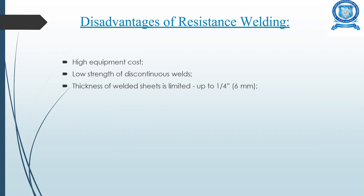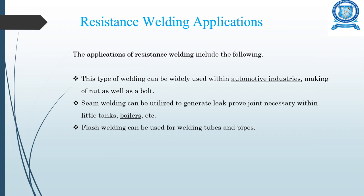The disadvantages of resistance welding are that the equipment cost is very high, there is low strength of discontinuous welds, and the thickness of the welded sheet is limited — only up to 6 mm thickness plate can be welded using resistance welding.